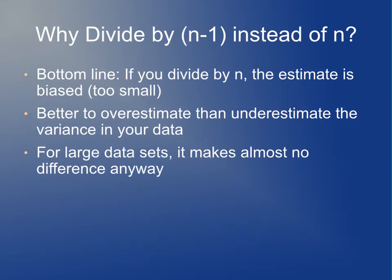The next question is, why do we divide by n minus 1 instead of n? The short answer is that if you divide by n, it turns out the estimate is slightly biased—you end up with a standard deviation that's too small. In general, it's better to overestimate than underestimate the amount of variance in your data, so you divide by n minus 1. For large data sets, it makes very little difference anyway.